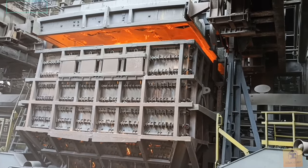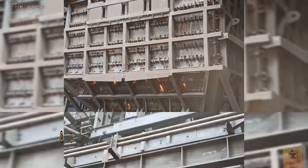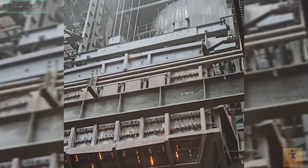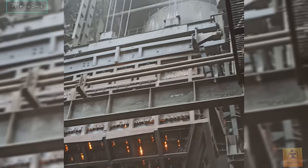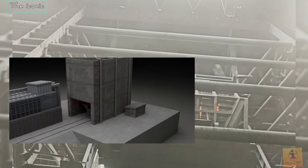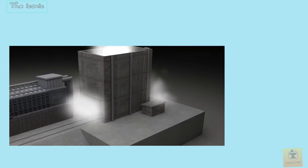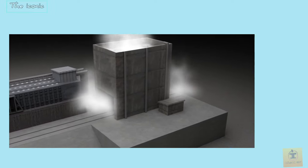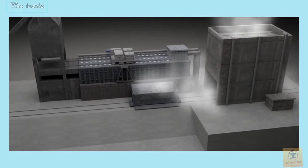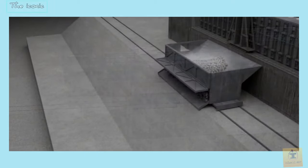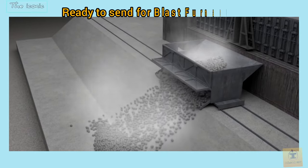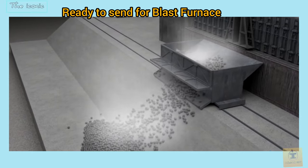The coke bucket is lifted to the top of the quenching chamber. The quenching process cools the coke down and is then moved out. The quenching process is completed and the coke is removed.